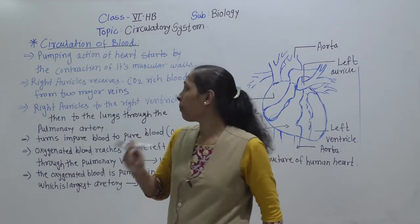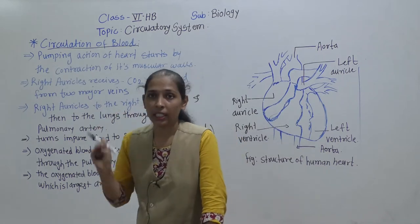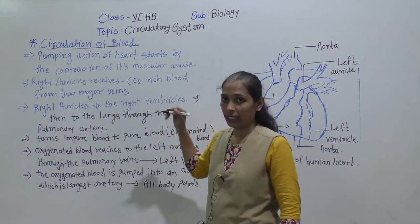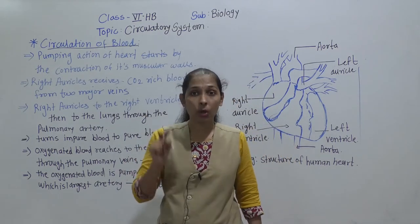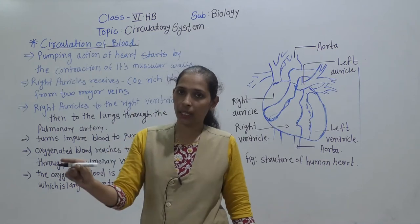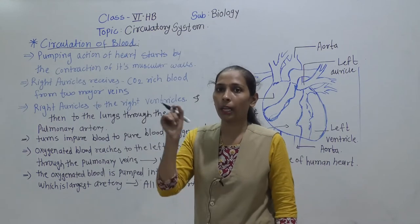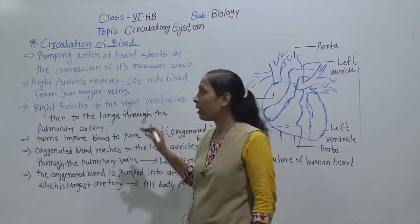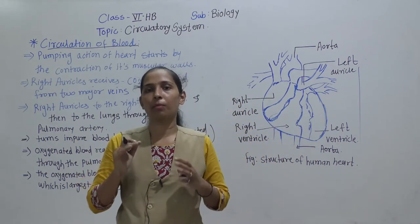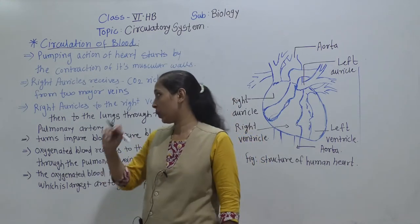The right auricle receives carbon dioxide-rich blood, which we can also call deoxygenated blood or impure blood. 'Deoxygenated' means oxygen has been removed from that blood. The right auricle receives this deoxygenated or impure blood from two major veins situated on the anterior and posterior sides of the heart.